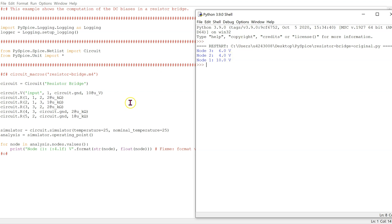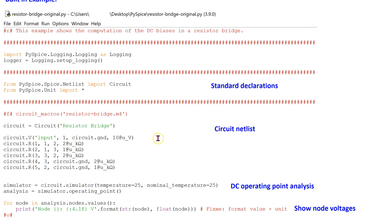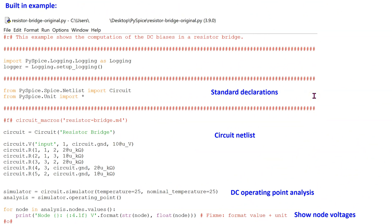Let us look at the code in more detail. This is the PySpice code to simulate the resistor bridge circuit. At the top, we have standard declarations that are needed for PySpice to run properly. The circuit netlist is here. These two lines invoke the DC operating point analysis. Finally, these two lines show the node voltages. When we run the module, we get the simulation result as shown previously.